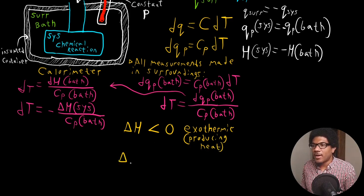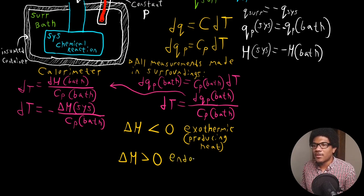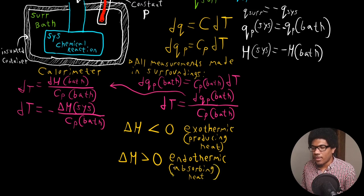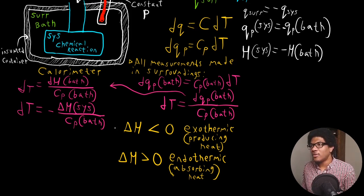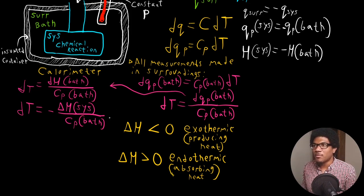The opposite: if our ΔH is greater than zero, we're going to see a decrease in temperature. This is what we call endothermic — it means that the system is absorbing heat. So depending on whether the system is absorbing or producing heat dictates whether you'll see an increase or decrease in temperature with respect to the measurement of the chemical reaction.